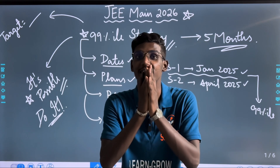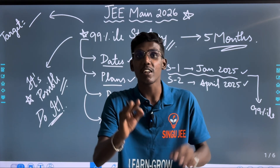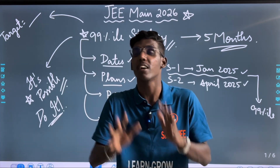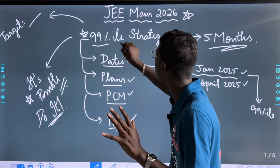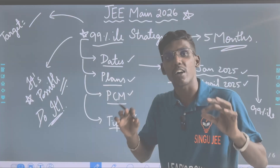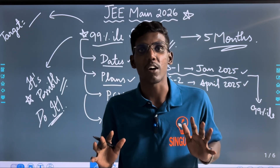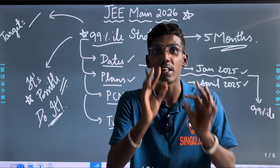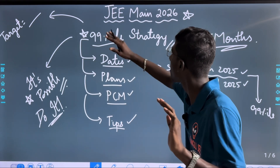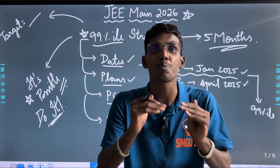Welcome back to J-Main 2026. You are now in the 5th month. When you start the year, you will get a very clear and correct plan for your 90% strategy at this level.